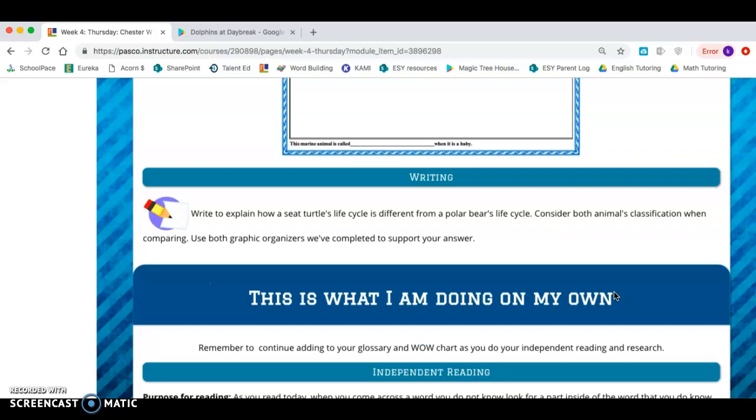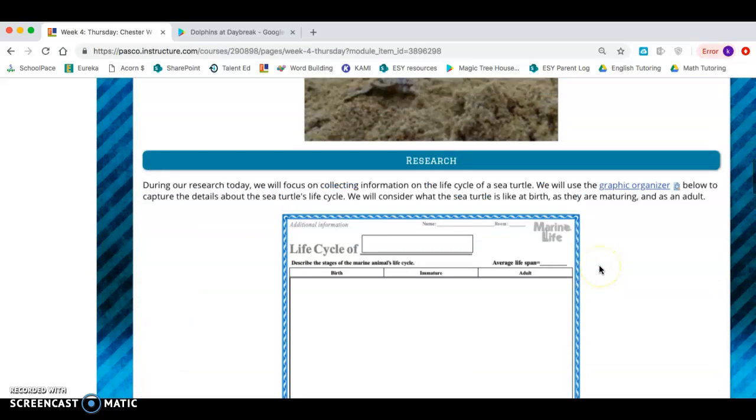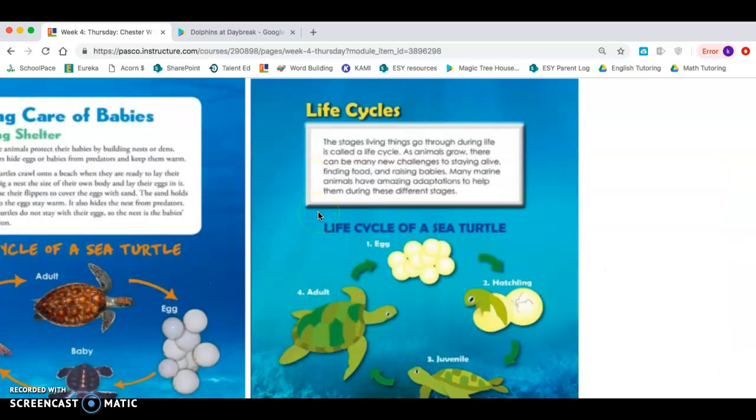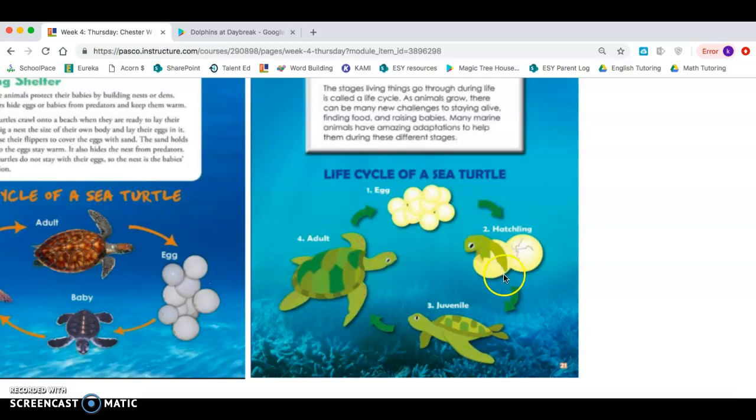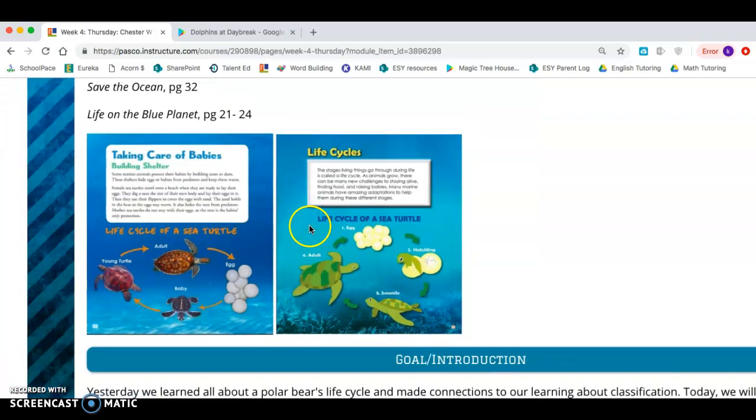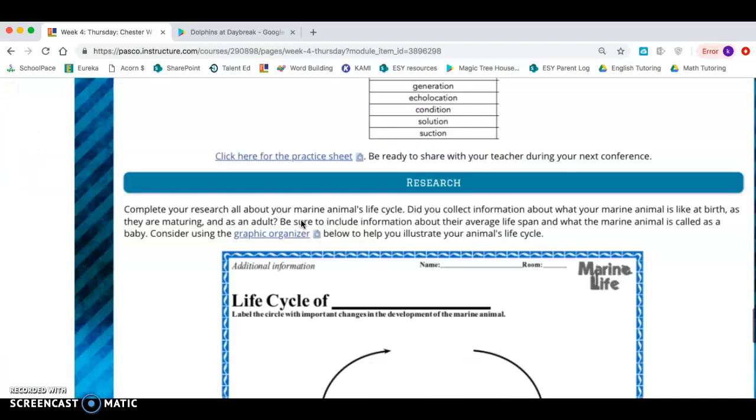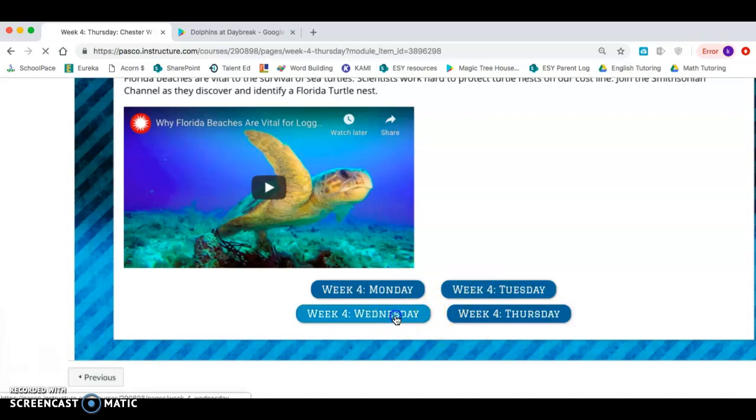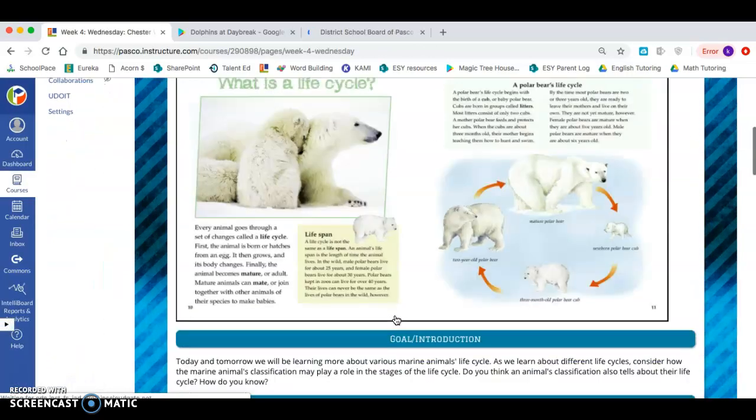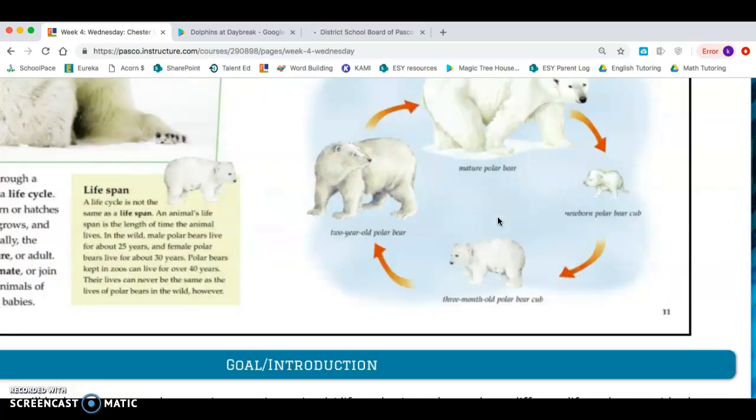Next we're going to answer this question together. It says write to explain how a sea turtle's life cycle is different from a polar bear's life cycle. Consider both animals' classification when comparing. Use both graphic organizers we've completed to support your answer. So if we go back up and look at the turtle's life cycle, I notice it's egg, hatchling, juvenile, adult. And if we go back and look at a polar bear's life cycle, let's see what the difference is. So yesterday we learned about polar bear's life cycle. A polar bear life cycle is newborn, three month old, two year old, mature.